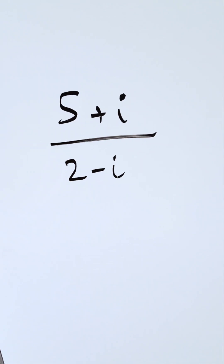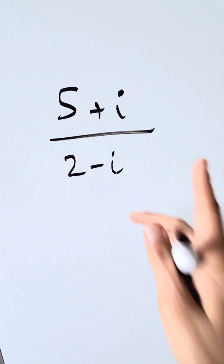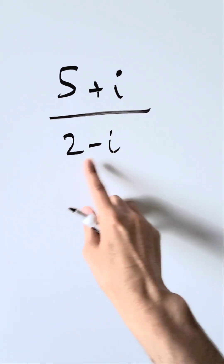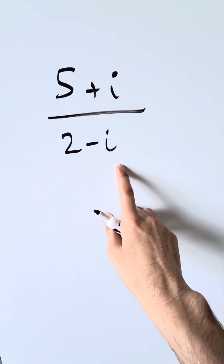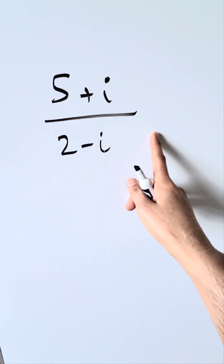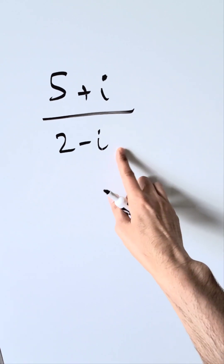I'm looking over here at this quotient of two complex numbers, 5 plus i and 2 minus i. How can we evaluate this?